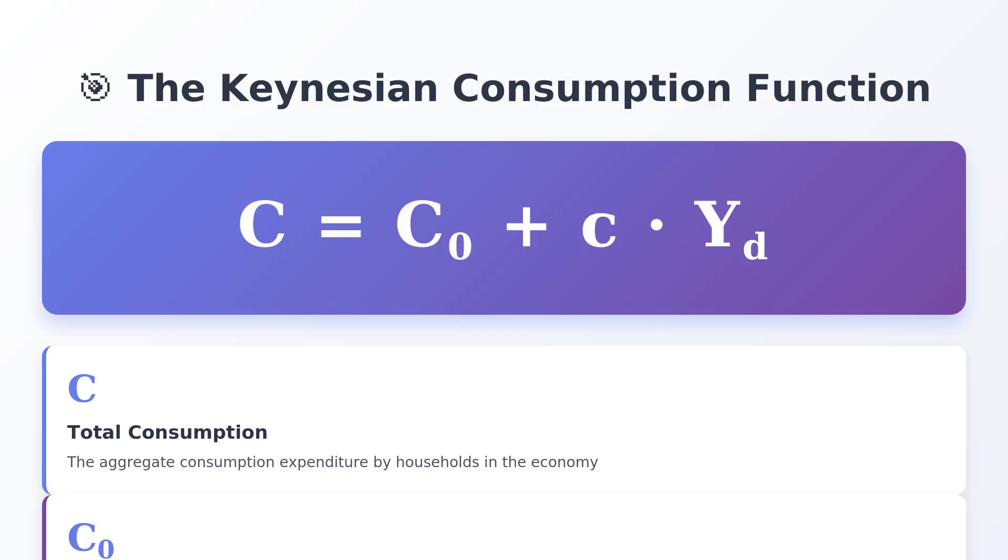But the real power, the genius of it, lies in the marginal propensity to consume, the MPC. This coefficient tells us that for every new dollar of disposable income, which we calculate simply as total output minus net taxes, only a fraction, maybe 80 or 90 cents, is consumed. And crucially, the MPC has to be greater than zero, but less than one. This constraint is the structural foundation of macroeconomics. It ensures that economic shocks dampen over time, and it forms the basis for the multiplier effect. By isolating YD, we isolate this critical, stable behavioral coefficient. Moving away from YD as the sole variable risks obscuring this primary mechanism.